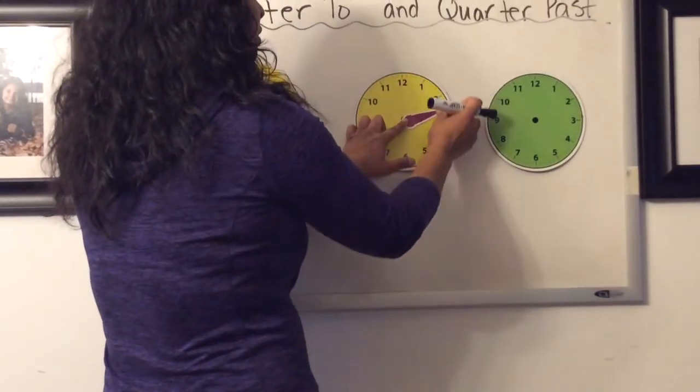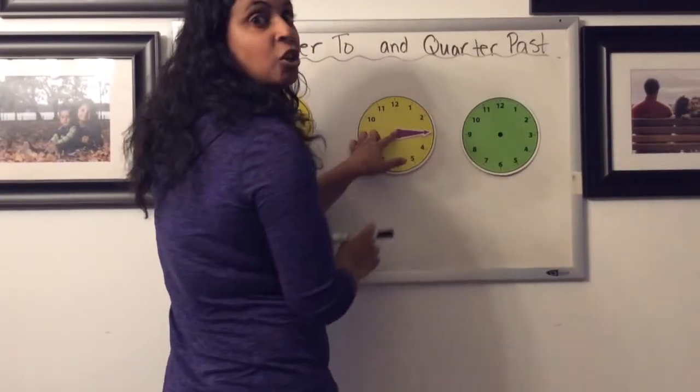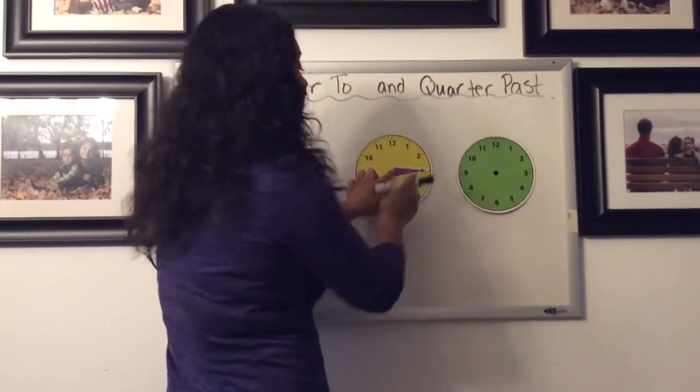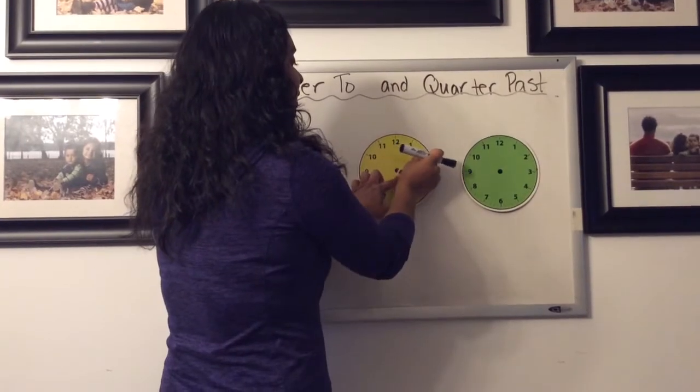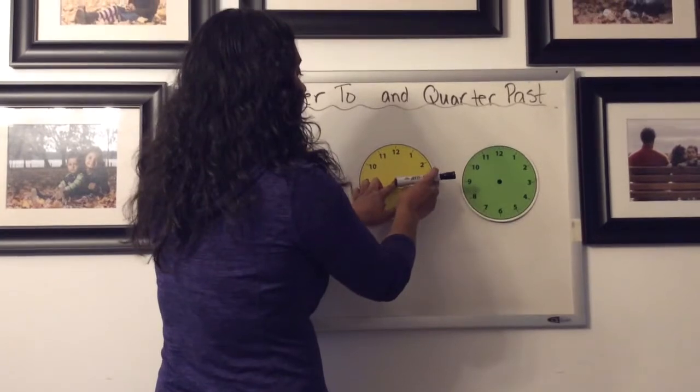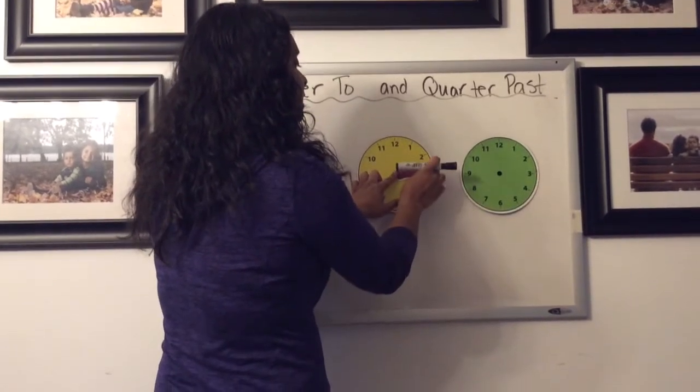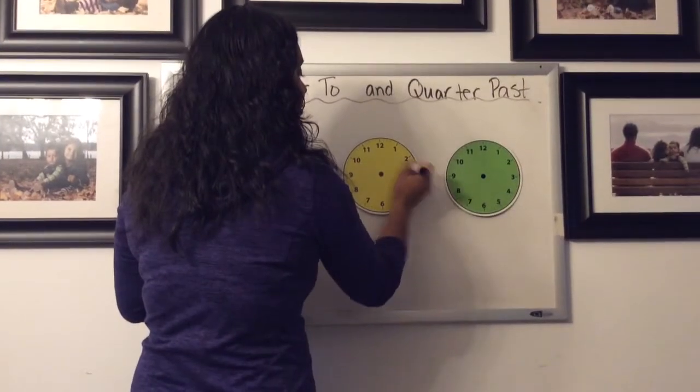This 3 marks the quarter after point. It means we've started a new hour, and when we get to the 3, we've gone one quarter of the way around the next hour. So we call this quarter past when we are at the 3.